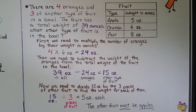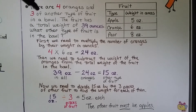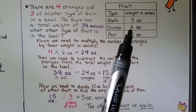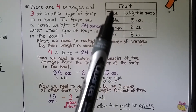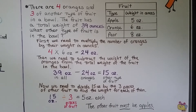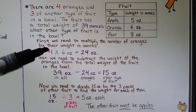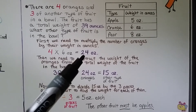We're going to end the lesson with a multi-step word problem using a table with data. The problem says there are 4 oranges and 3 of another type of fruit in a bowl, with a total weight of 39 ounces. What other type of fruit is in the bowl? From the table, oranges weigh 6 ounces each, apples are 5 ounces, and pears are about 8 ounces. First, we multiply the number of oranges by their weight: 4 times 6 ounces equals 24 ounces.